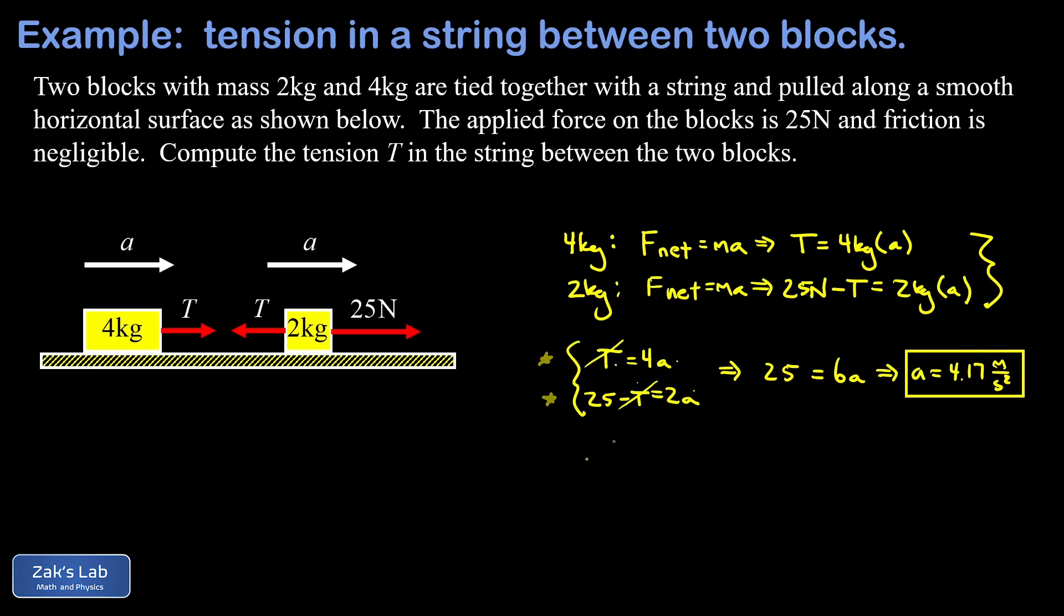So I have T equals 4a, but a is 4.17. And we arrive at the same tension of 16.7 newtons. And we're done.